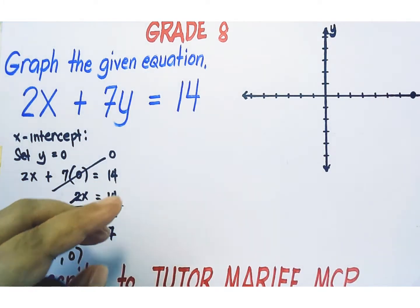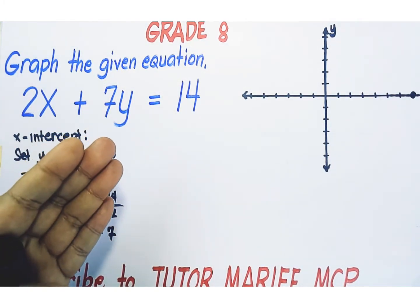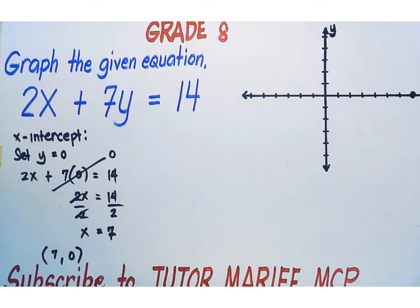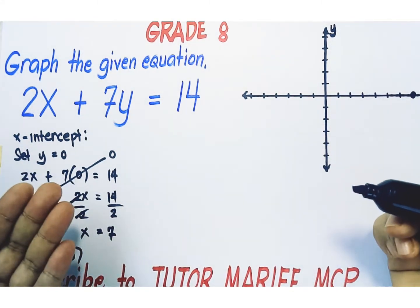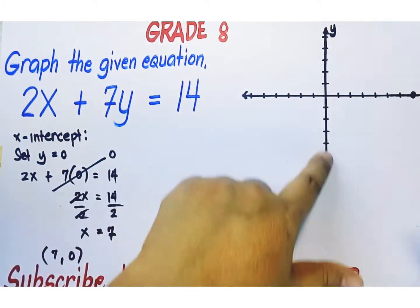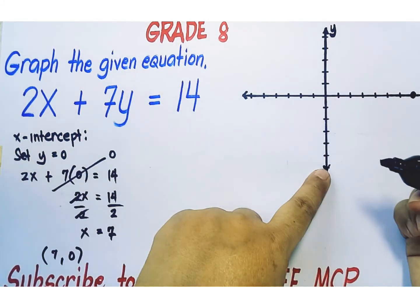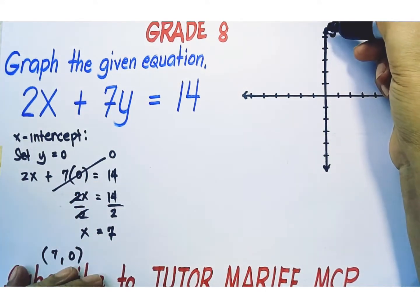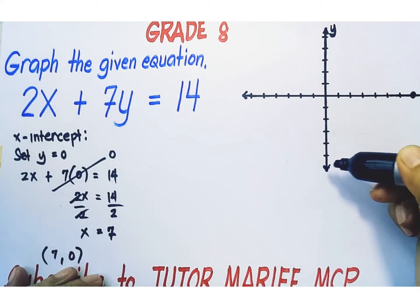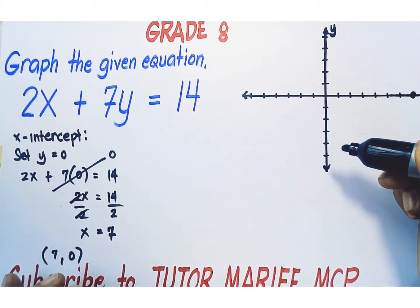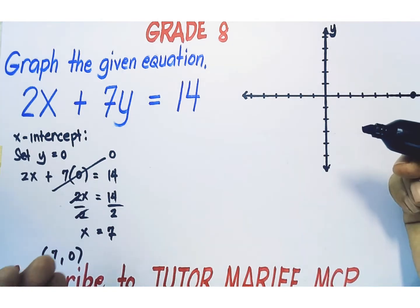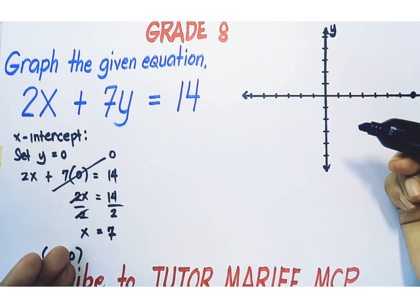Remember that two points are needed to draw a line, so we need one more point. Let's now solve for the y-intercept. The y-intercept is the point where the line crosses the y-axis. Any point located on the y-axis always has the x-coordinate equal to zero, so we set x to zero.